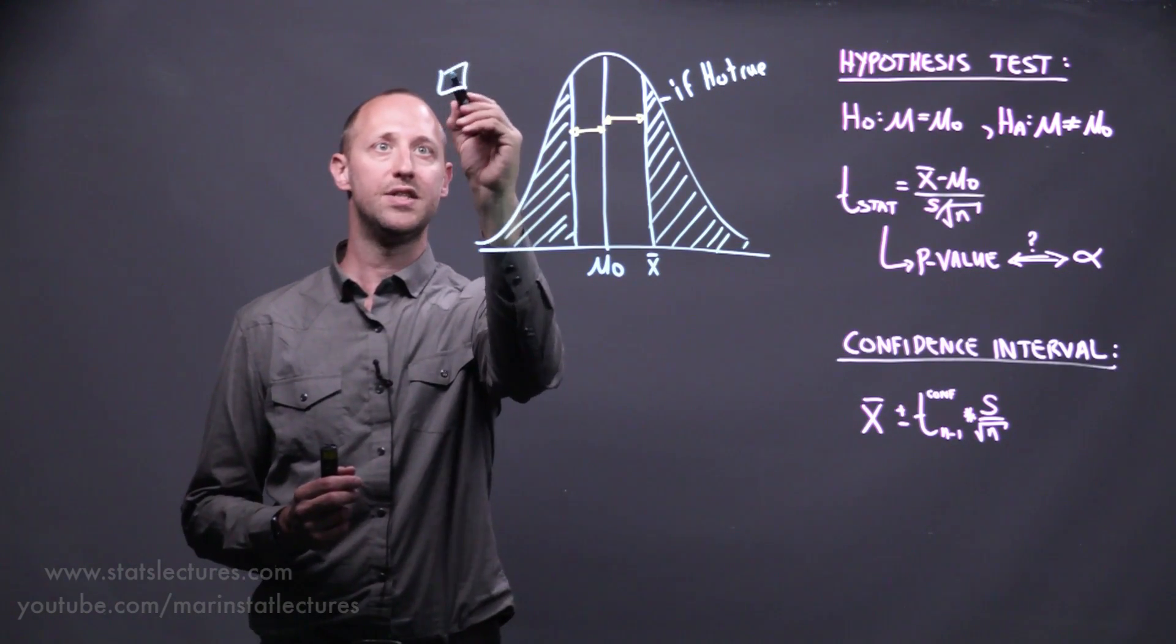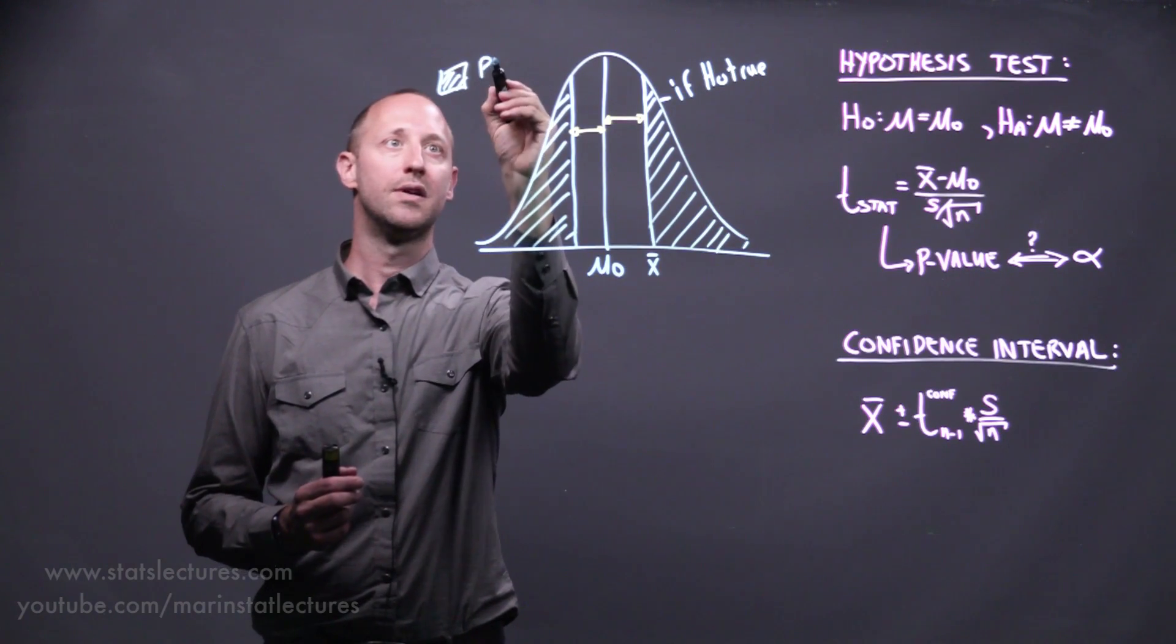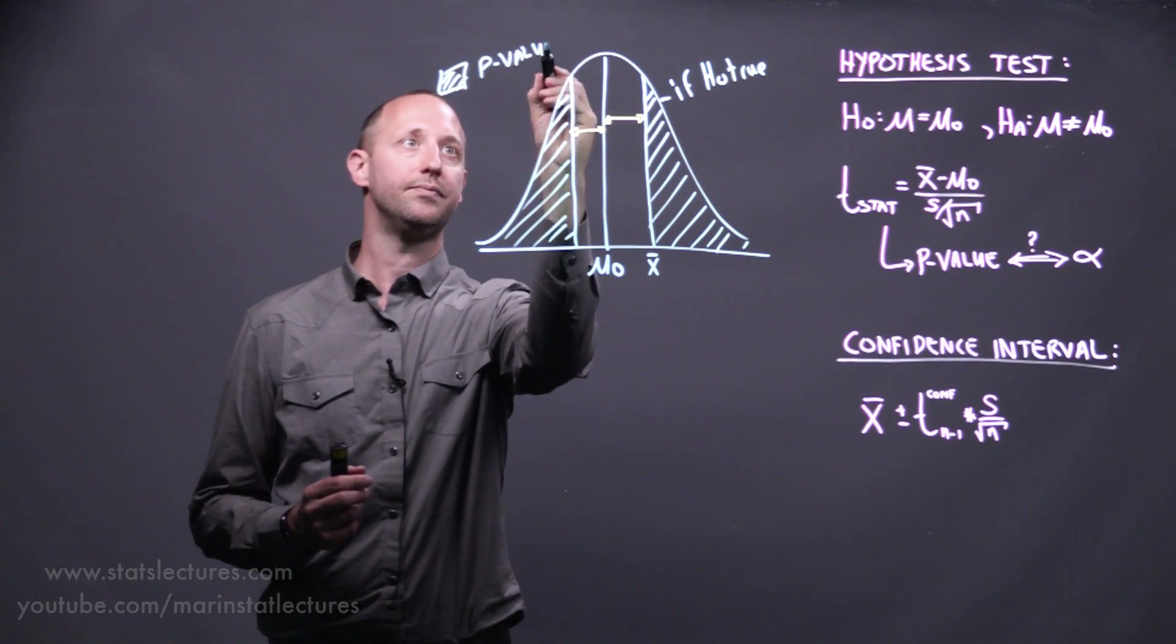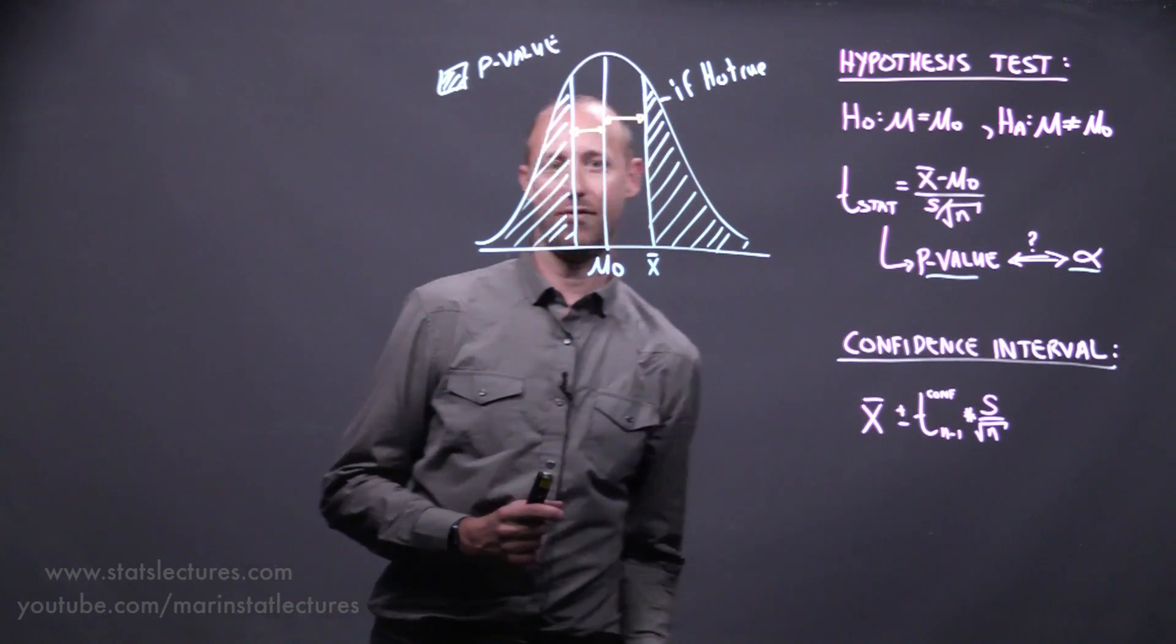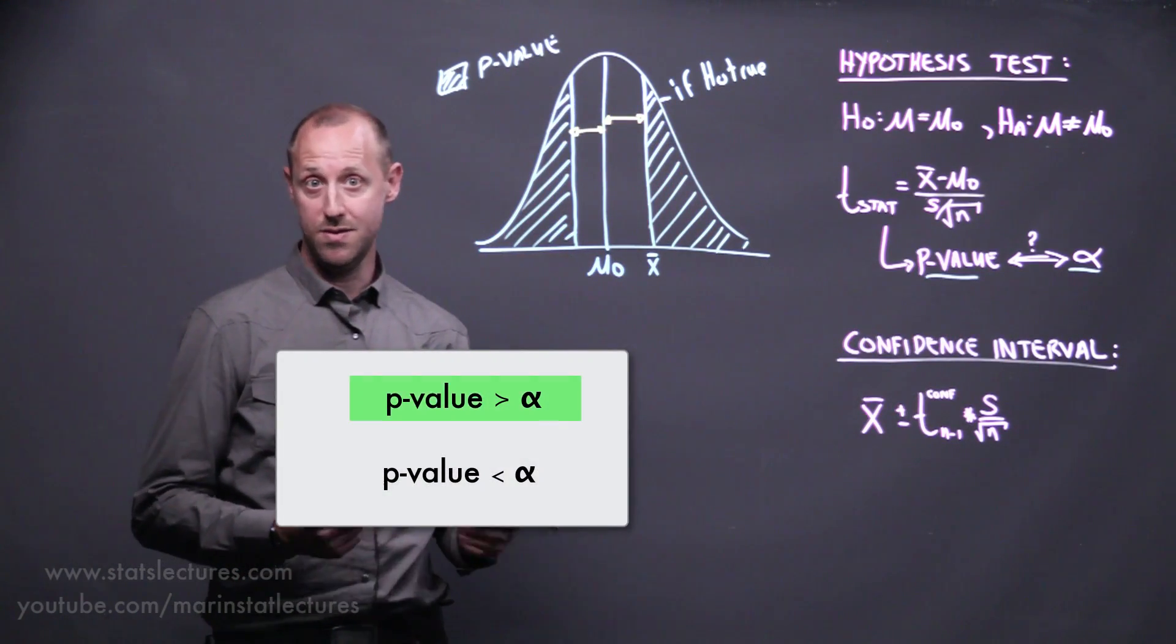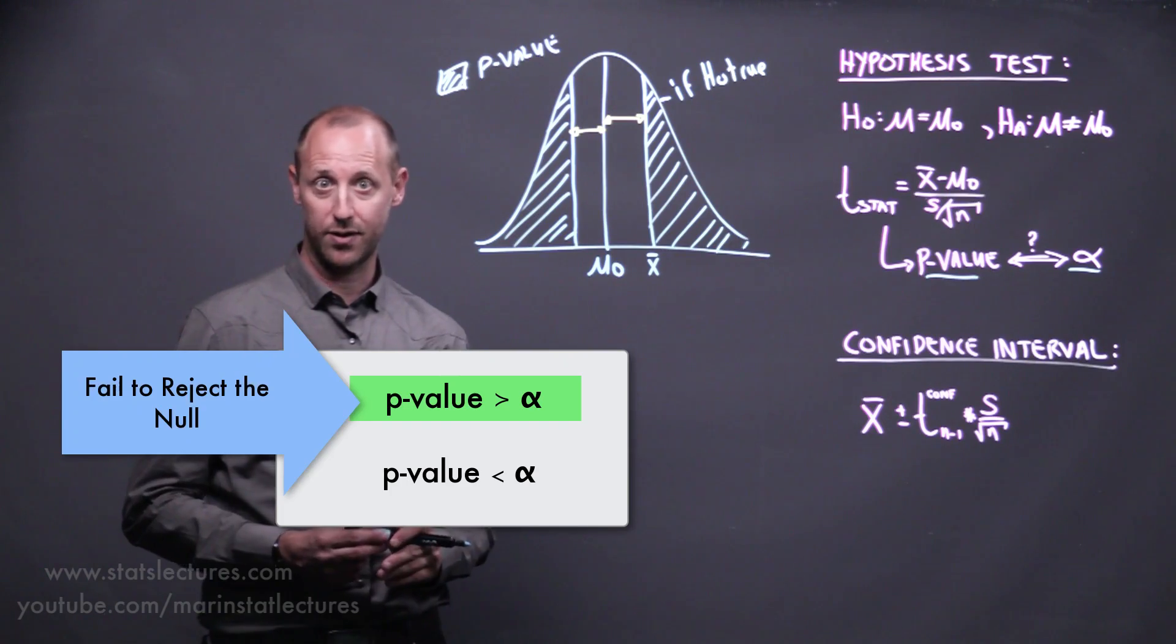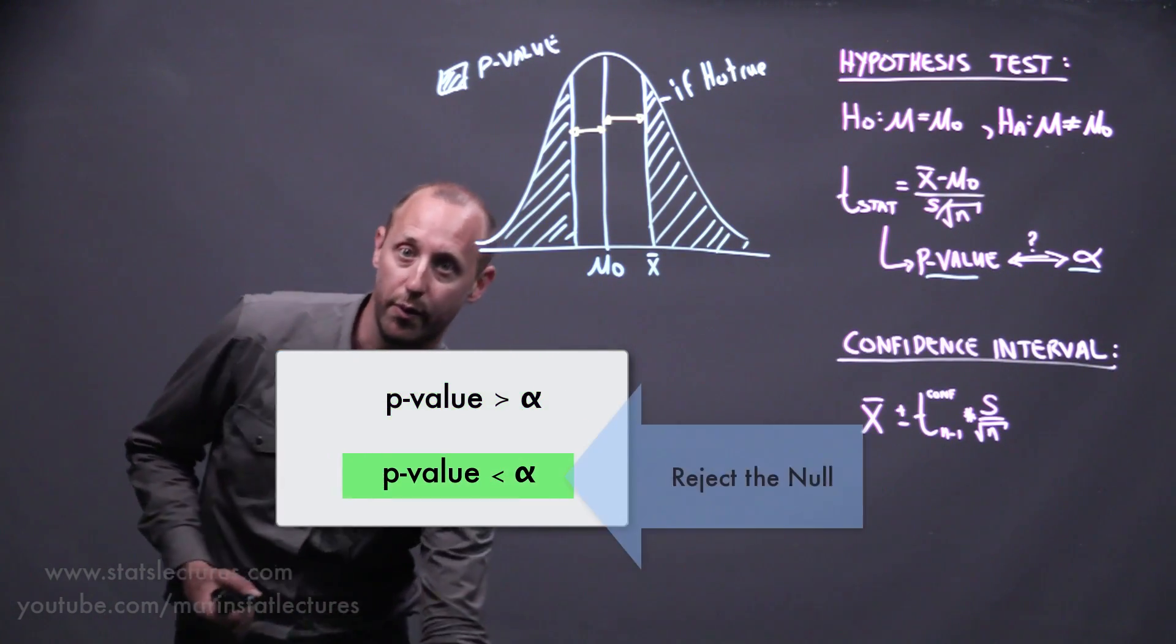This shaded area here is what we call our p-value. We compare that p-value to some alpha. If the p-value is larger than alpha, we fail to reject our null. If it's smaller than alpha, we reject our null.